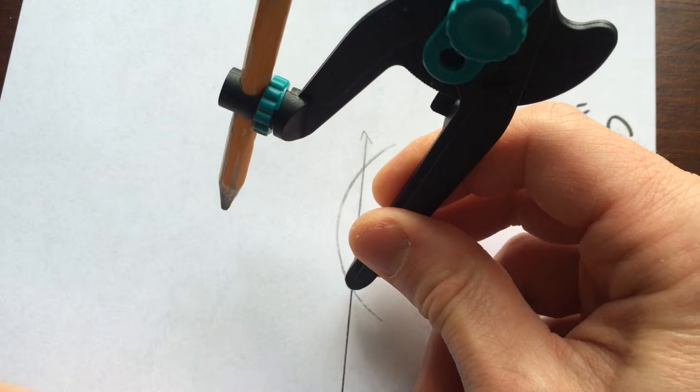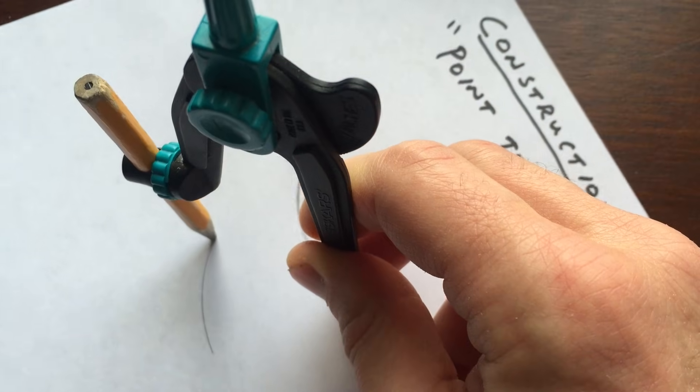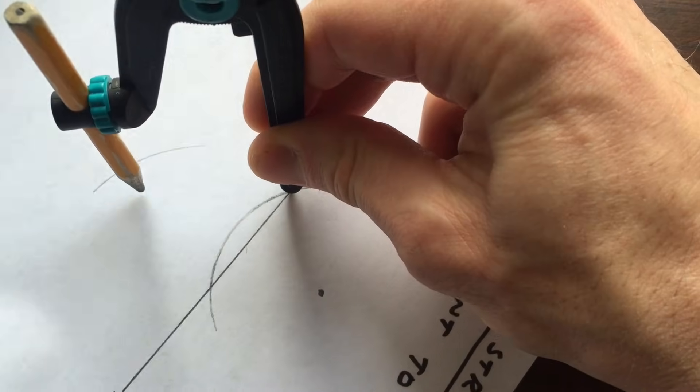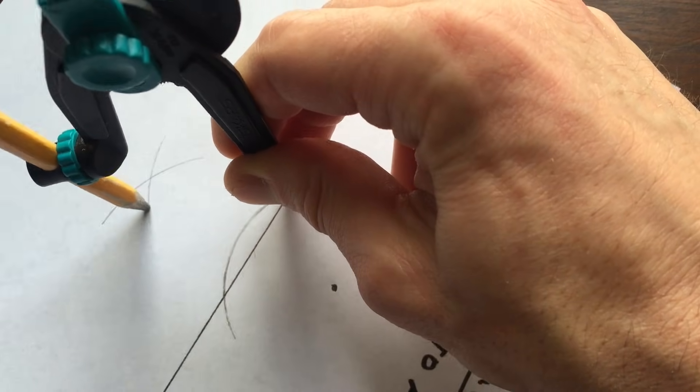I'm just going to open it up a little bit more, and I'm going to make an arc like this. I'm going to go to the other point of intersection here, keeping that same setting on the compass. I'm going to make a second arc.